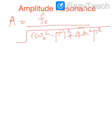When the oscillator exhibits amplitude resonance, its amplitude is maximum at a particular value of driving frequency. We need to determine what that driving frequency value is and what the maximum amplitude will be. Since amplitude is maximum when the denominator is minimum, we apply the minimizing condition: d/dp [(ω₀² − p²)² + 4k²p²] = 0.